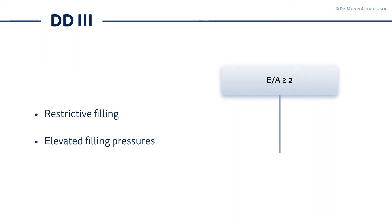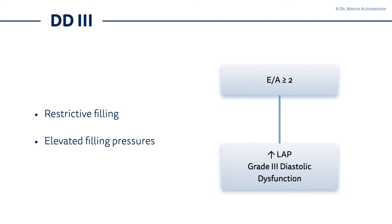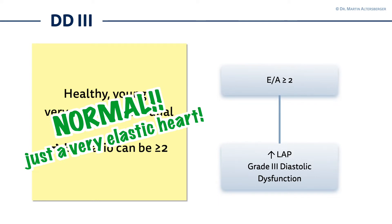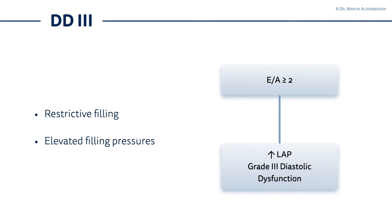The first situation you always have to identify is the so-called Diastolic Dysfunction Grade 3 with definitely elevated filling pressures, or the restrictive filling. You measure first the E to A ratio, and if it is 2 or above 2, we have Grade 3 Diastolic Dysfunction. Be aware this applies to sick left ventricles. If you have a young healthy individual or someone who does a lot of sports, the E to A ratio can be above 2, which is simply supranormal because the heart is not stiff but very elastic.